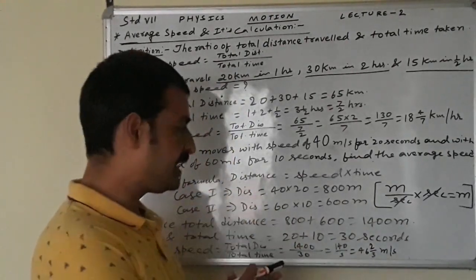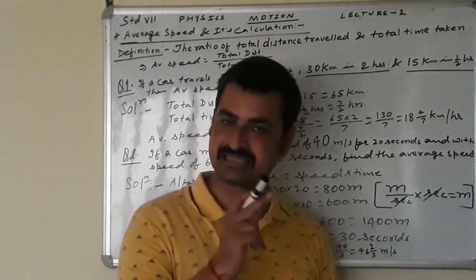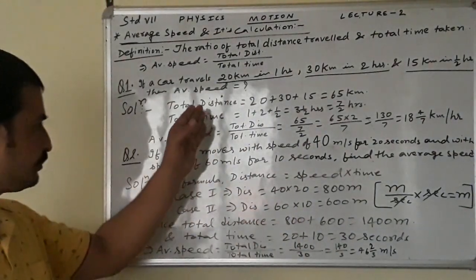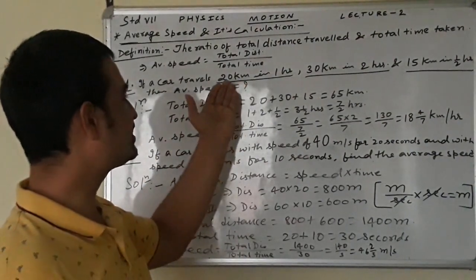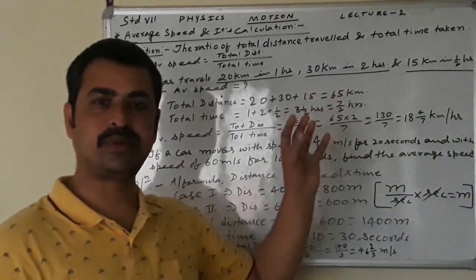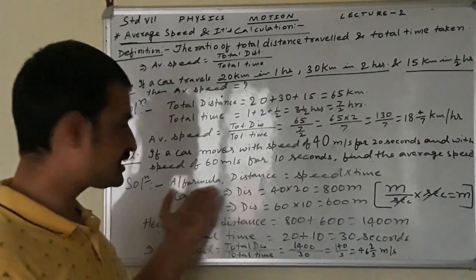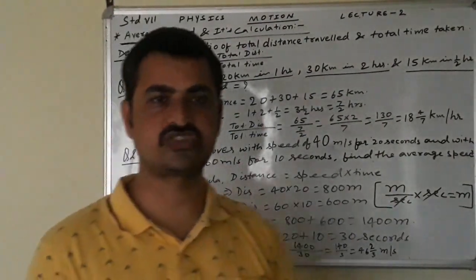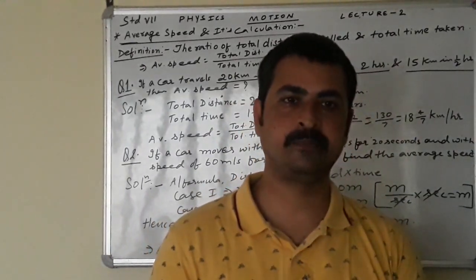This part is completed. The calculation of average speed in the second numerical is also completed. Now you need to practice both types of questions by creating your own problems. Just put any digits instead of the given values — 20 and 1, 30 and 2, 15 and half. Create your own questions and solve them. If you have any problem, my number is available on WhatsApp and you are free to contact me.